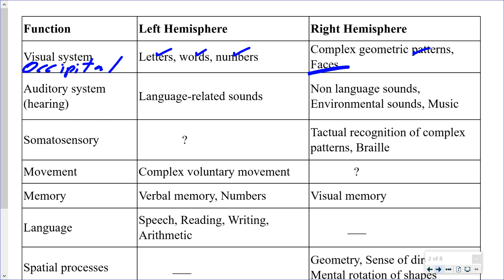For the auditory system, hearing information coming in from the ears goes to the temporal lobes — the lobe closest to the ears. Sound information is processed there. The temporal lobes are also responsible for certain aspects of memory. What sort of information is being processed on the left hemisphere compared to the right, in terms of sound information?